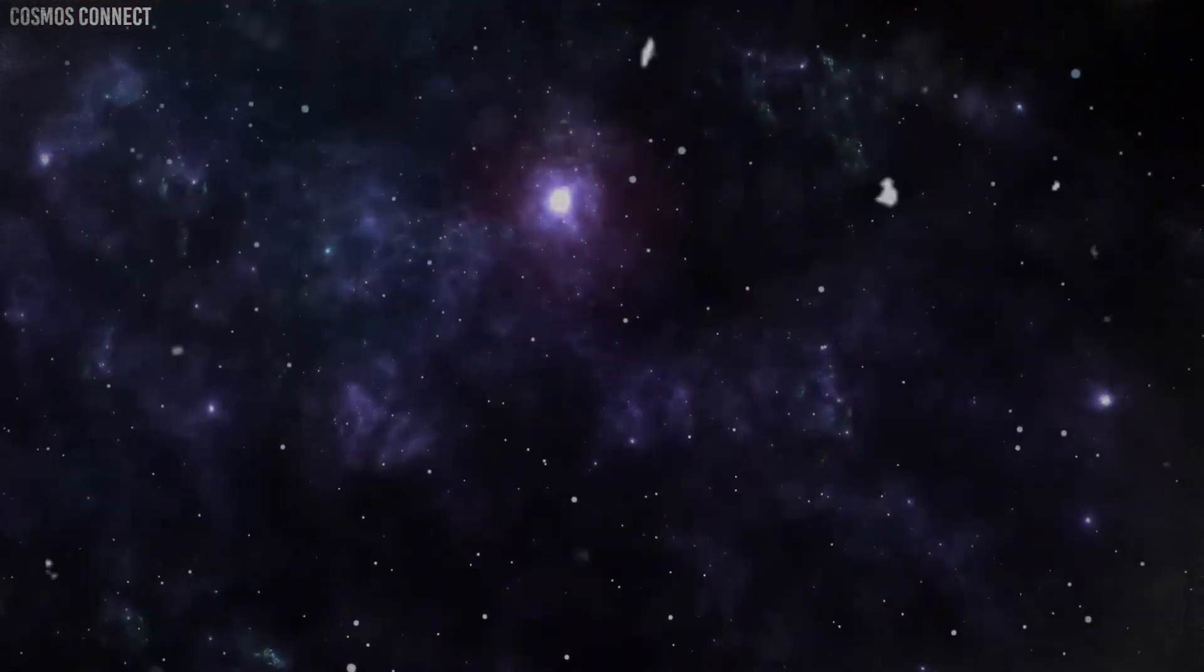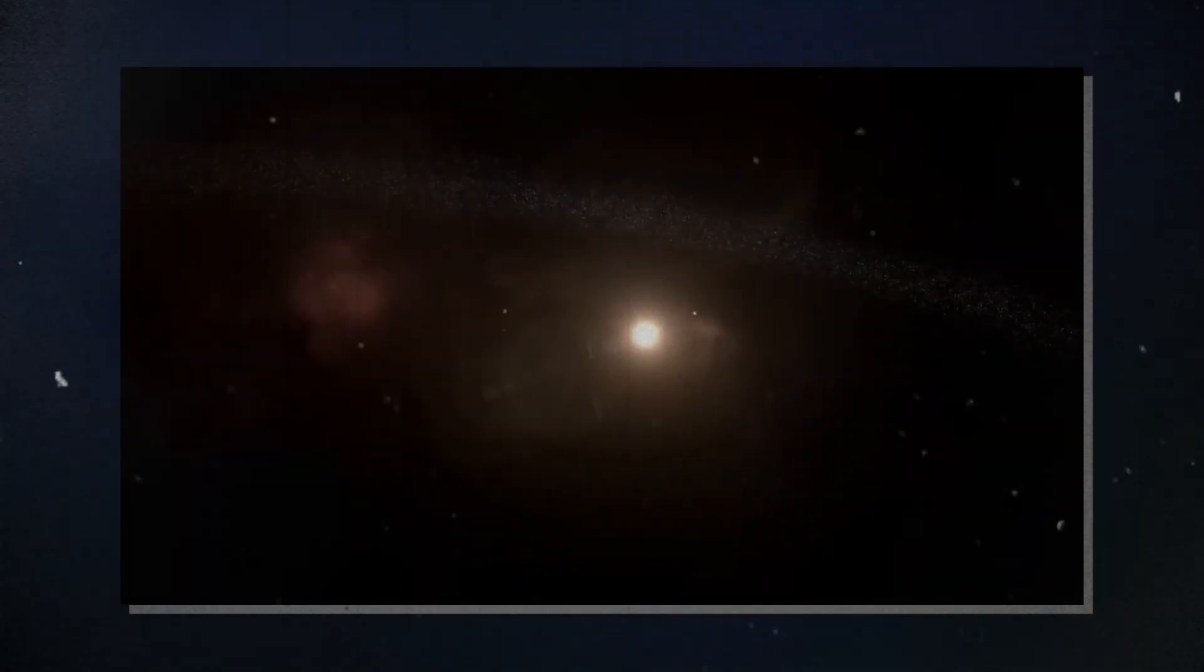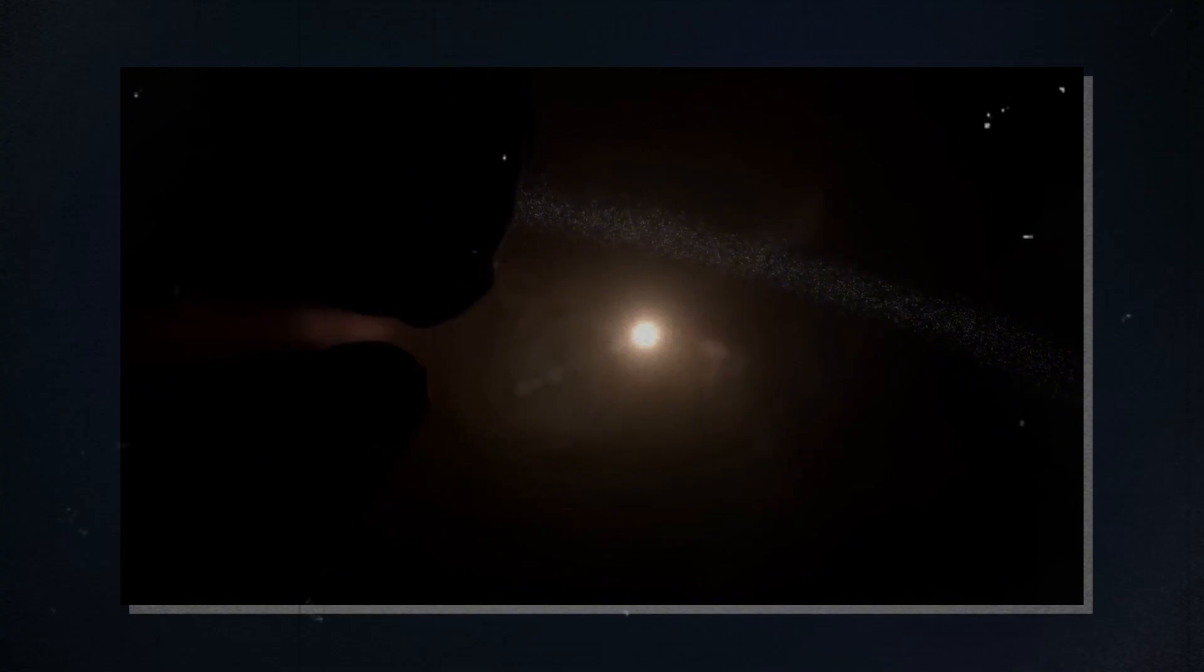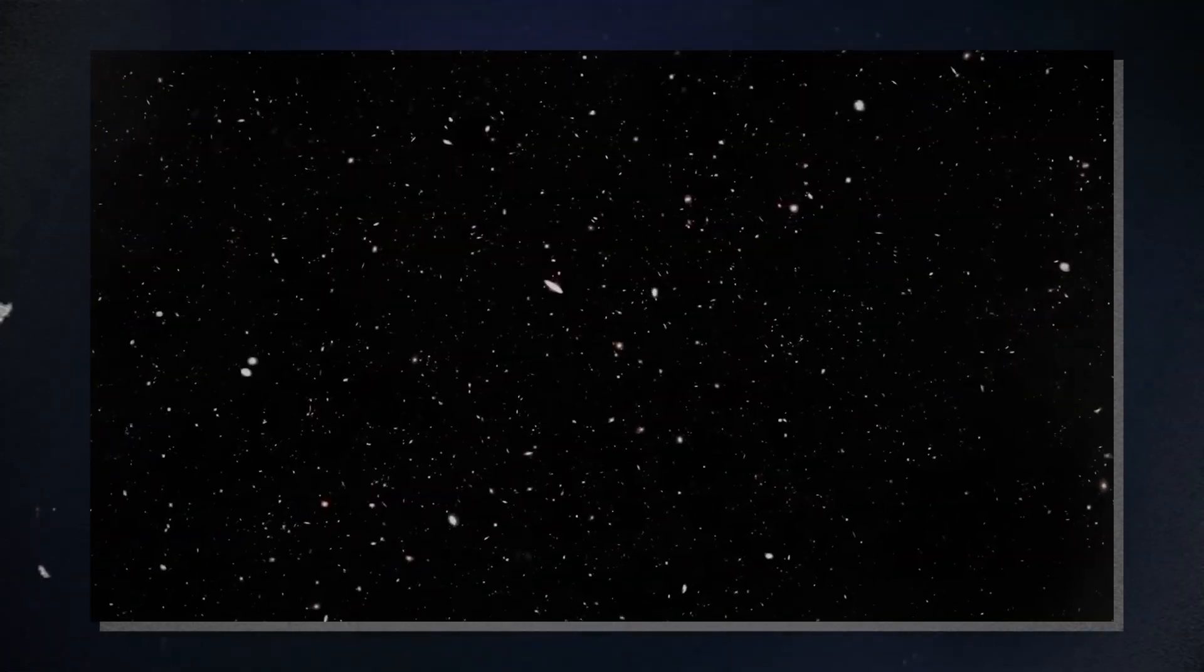To detect such faint signals, NASA uses massive antennas. These antennas are 230 feet in diameter, and are part of the deep space network.